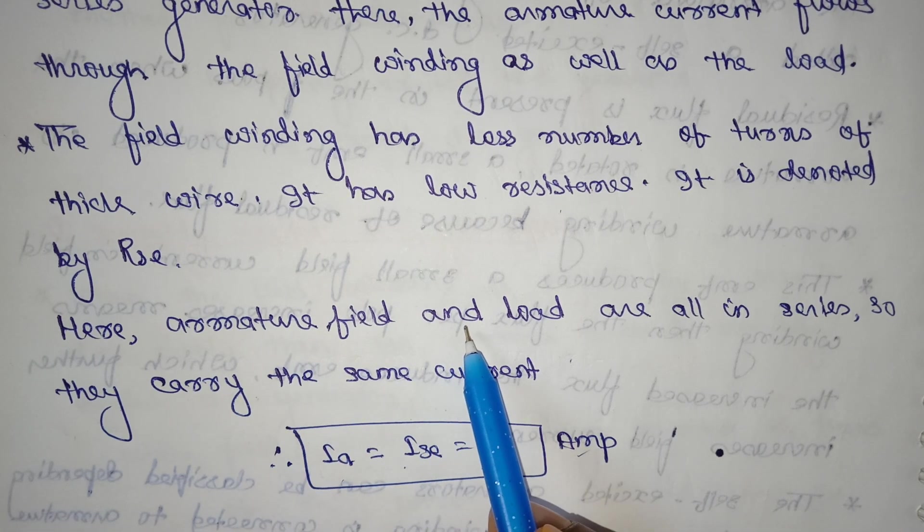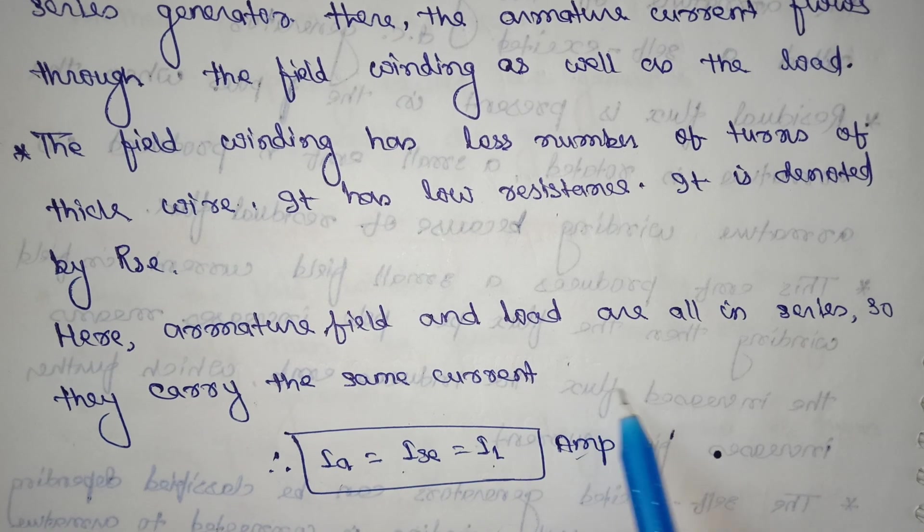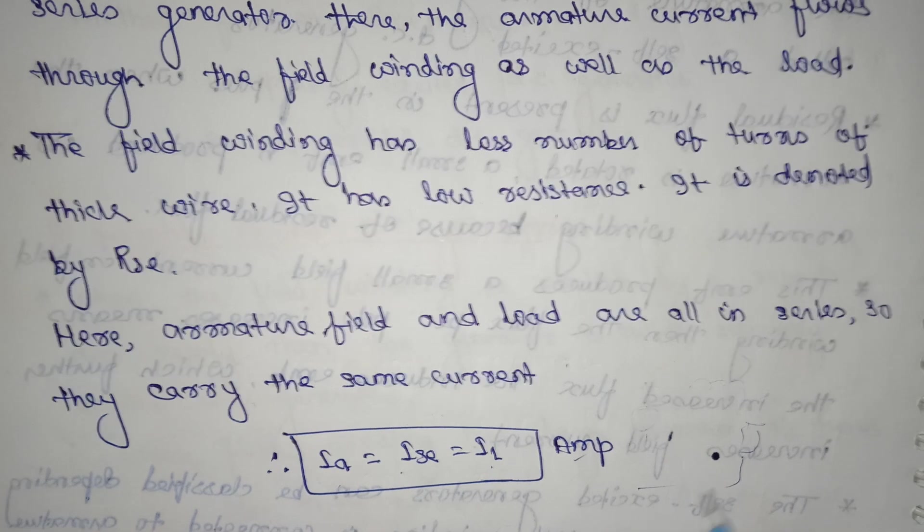Here the armature, field, and load are all in series, so they carry the same current. You can see here that it is drawn like that. This is the load, so Ia = Ise = IL.